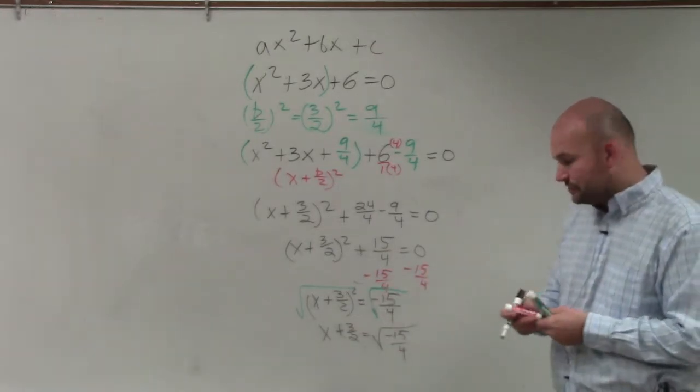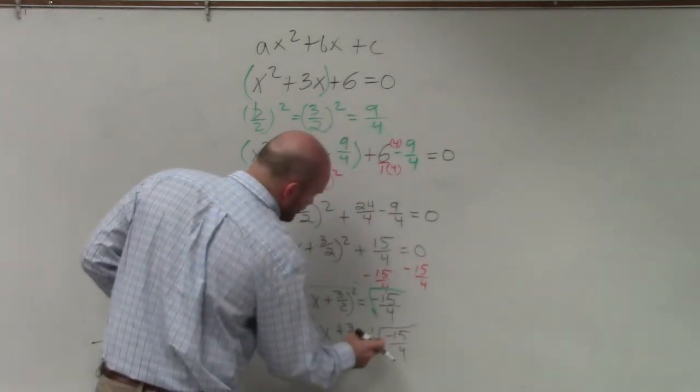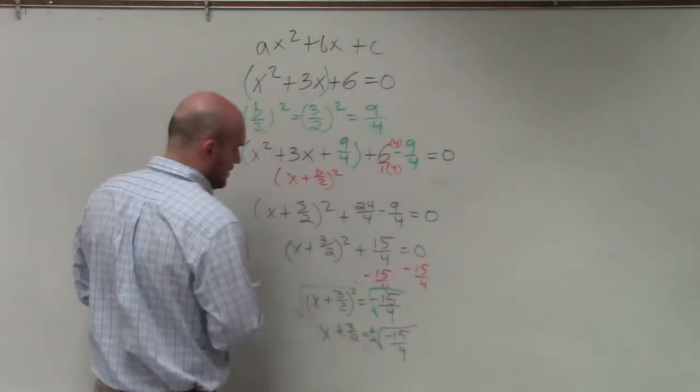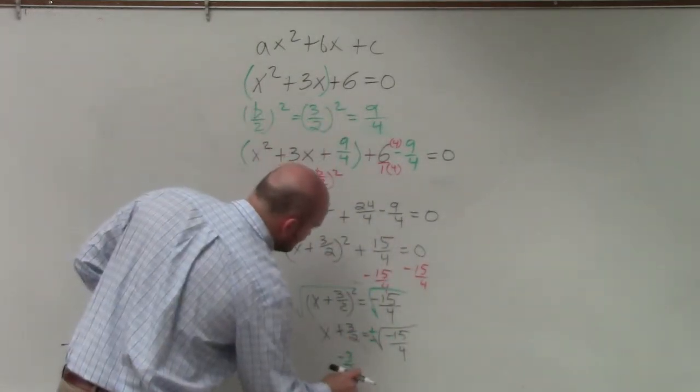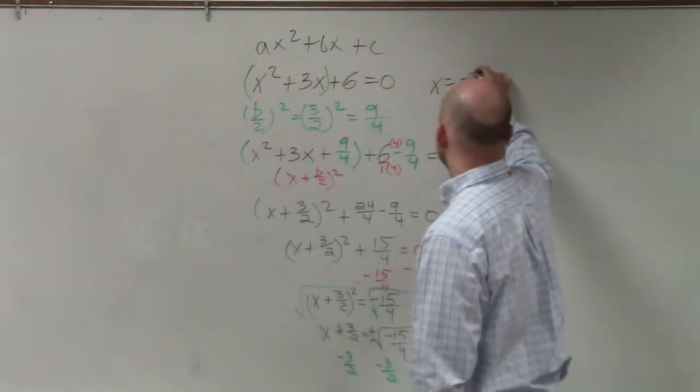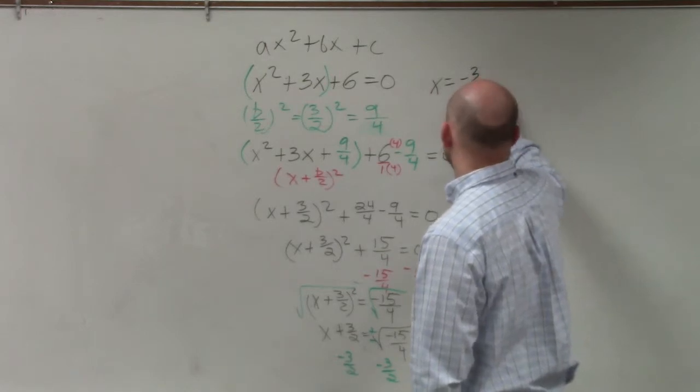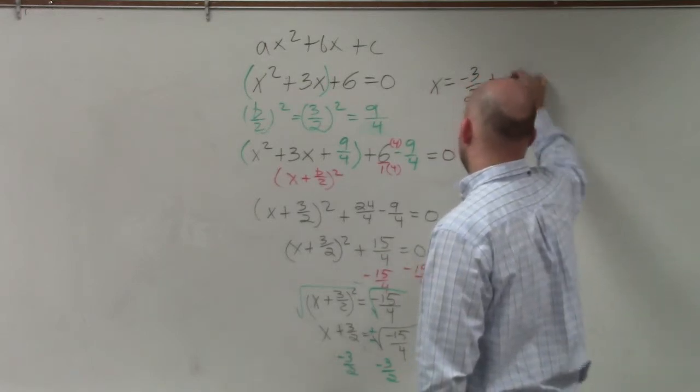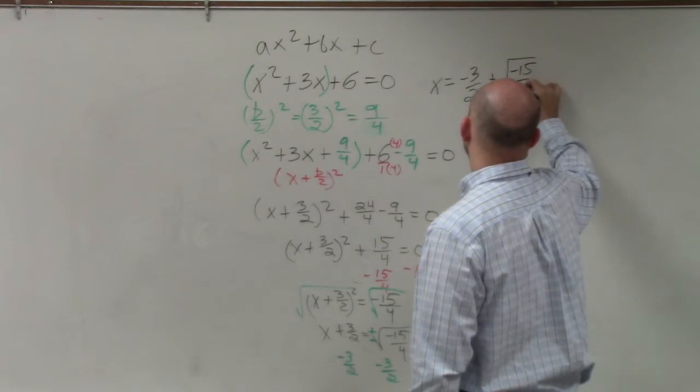Remember, though, when I introduced the square root, ladies and gentlemen, make sure you include plus or minus. And then you subtract 3 halves. So your final answer should be x equals negative 3 halves plus or minus the square root of negative 15 over 4.